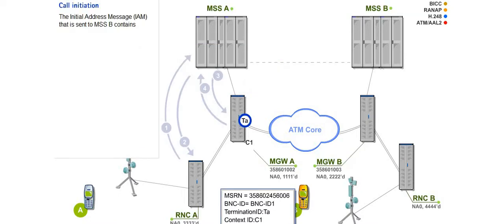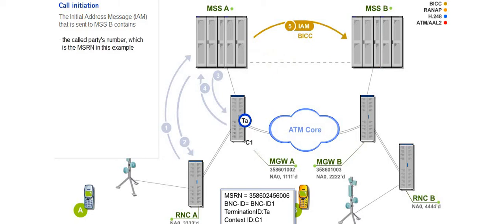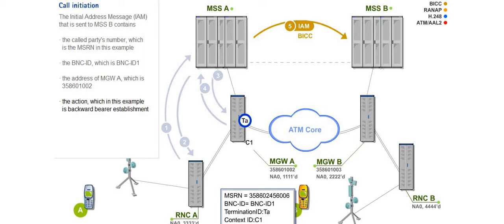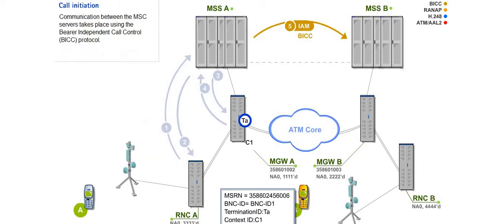The initial address message, or IAM, that is sent to MSSB contains the called party's number, which is the MSRN in this example; the BNC ID, which is BNC ID 1; the address of MGWA, which is 358601002; the action, which in this example is backward bearer establishment; and the transport type, which is AAL2 in this example. Communication between the MSC servers takes place using the bearer independent call control, or BICC, protocol.